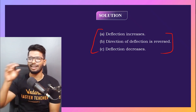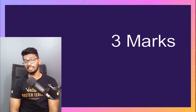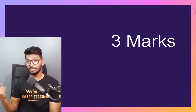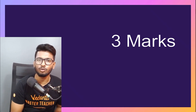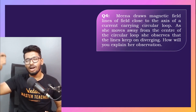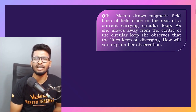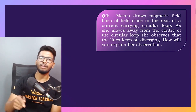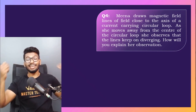That's the end of the two-mark questions. Now let's move on to the three-mark questions. With three-mark questions, you have to explain a little more than the two-markers. Here's the first one: Meena draws magnetic field lines close to the axis of a current-carrying circular loop. As she moves away from the center of the circular loop, she observes that the lines keep on diverging. How will you explain her observation?